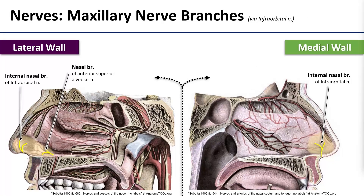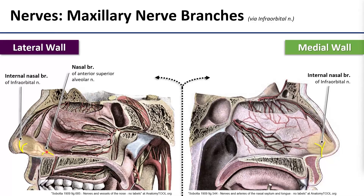Just like we had branches of the facial artery peeking through the nostrils, we also have branches from the infraorbital nerve that do the same — these are called nasal branches and they supply the area around the nostrils. There is one additional nasal branch from the superior alveolar nerves that comes in right above the incisors.